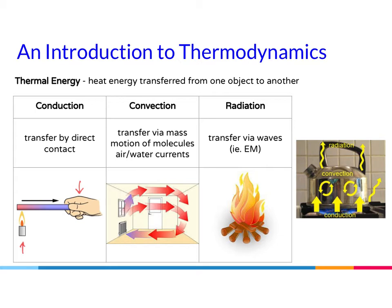Convection is heat energy transfer via mass motion of molecules — this could be air or water currents. In the image, cooler air comes in from the window, gains kinetic energy or heat from the room, becomes warm, and then circulates down as it cools, keeping blowing around and around in a circular motion.